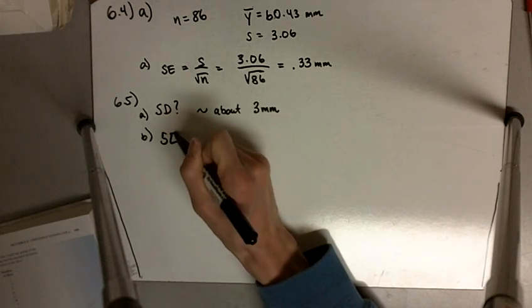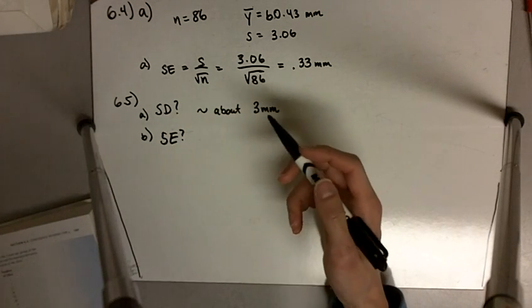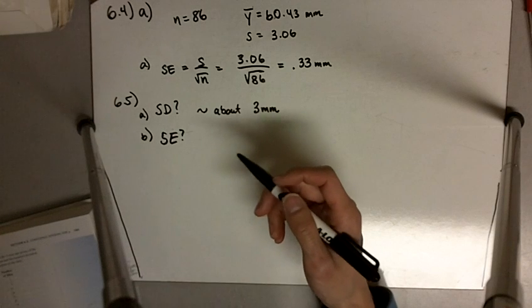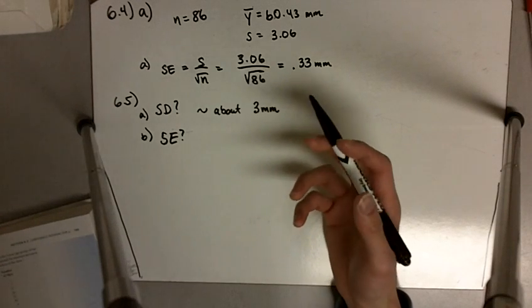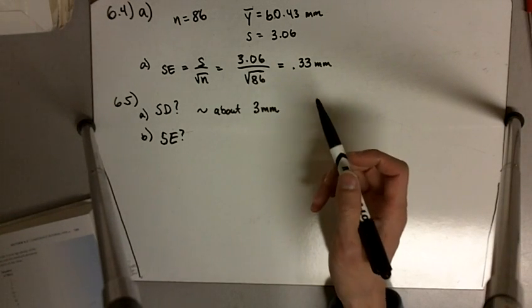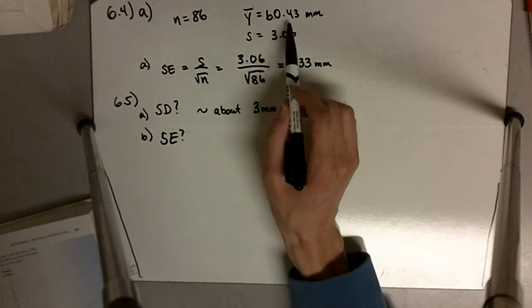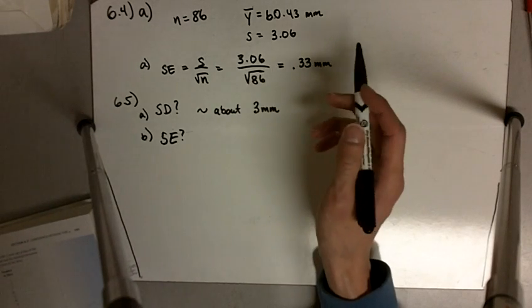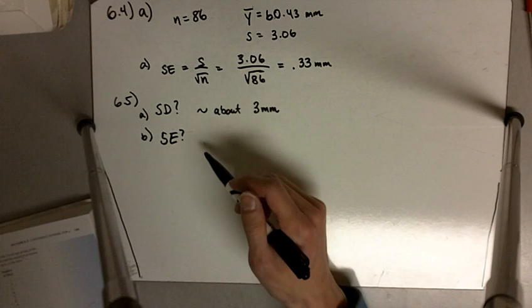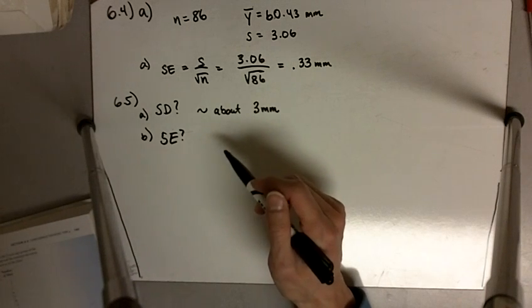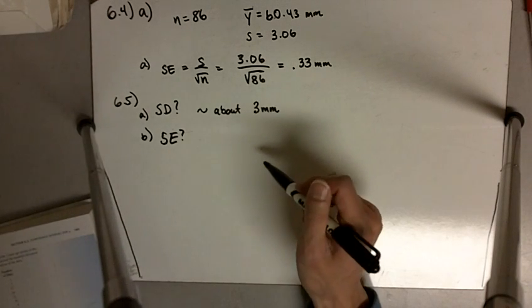So in this case, for the standard error, remember, this is an estimate, or it gives us an idea of how close the mean measurement, whether that y-bar is 60.43 or something else, it tells us how close that mean measurement is to the actual population mean.